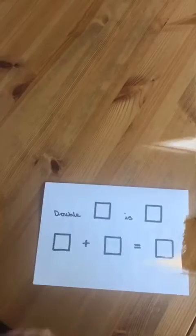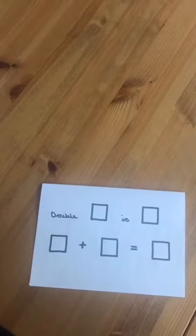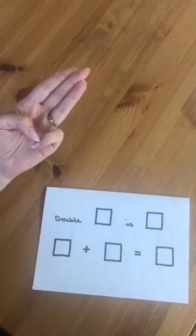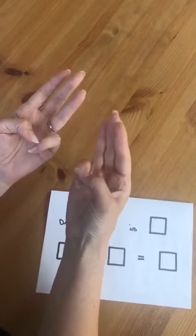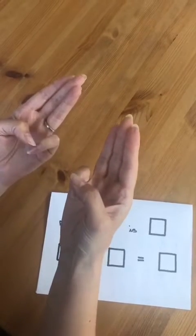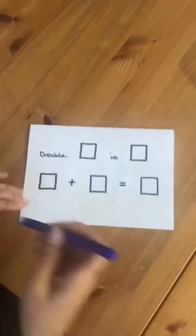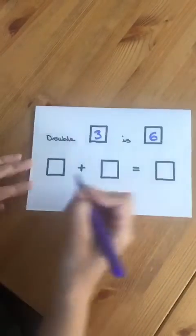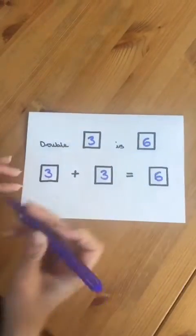We can practice doubling on our hands because we have two hands each. If I showed three fingers on this hand to make a double, I would need the same amount of fingers on the other hand. How many do I have altogether? One, two, three, four, five, six. Three plus three is six. Double three is six because three plus three equals six.